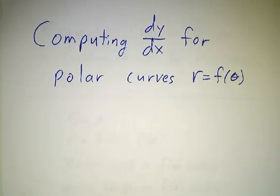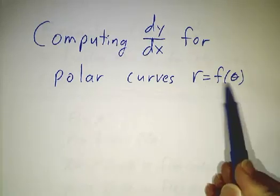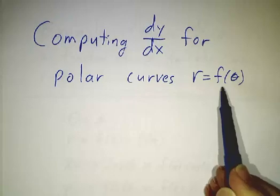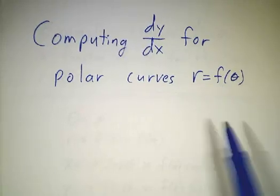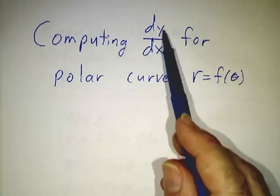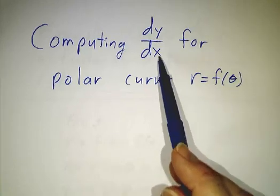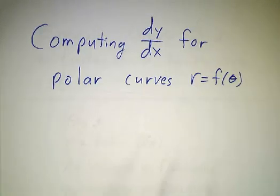Now that we've described what a polar curve is, curves in polar coordinates where we have the radius as a function of theta, what we want to do is do calculus with these polar curves. We want to figure out how do you get the slope of a tangent line, that is dy/dx, if somebody just gives you r as a function of theta.